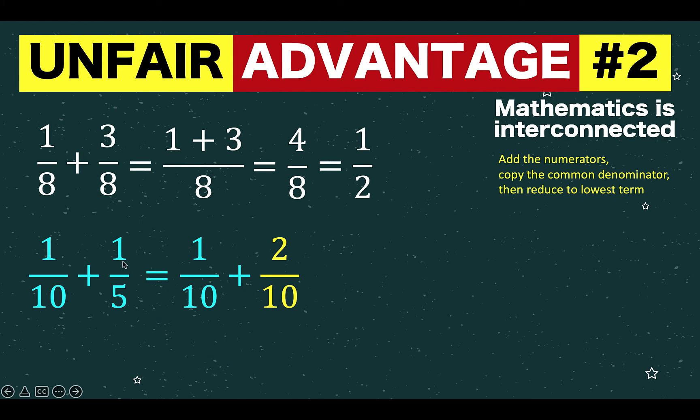And we know that 1 over 5 is the same as 2 over 10. Where 1 over 5 is the lowest term, 2 over 10 is one of the higher terms. And once 1 over 5 is now re-expressed as 2 over 10, then we apply the same rule. We add the numerators, we copy the common denominator and reduce to lowest term if possible.